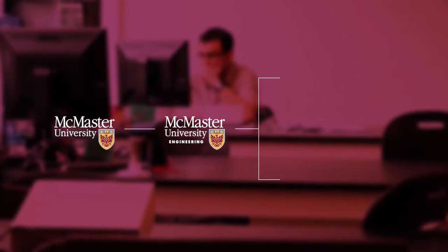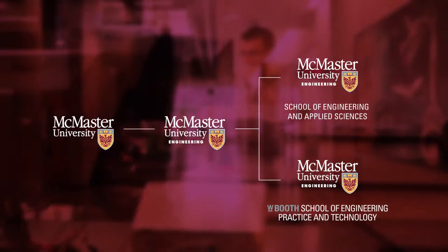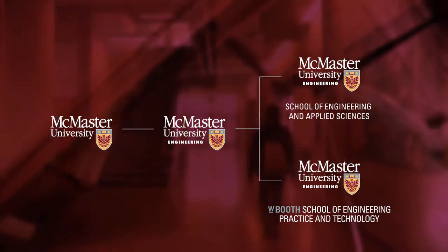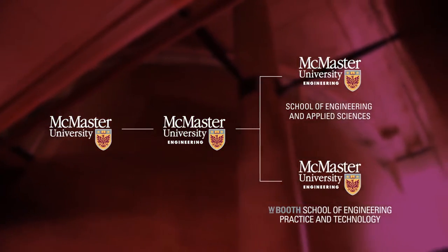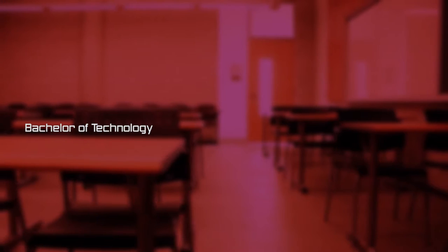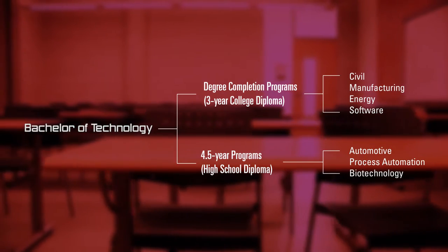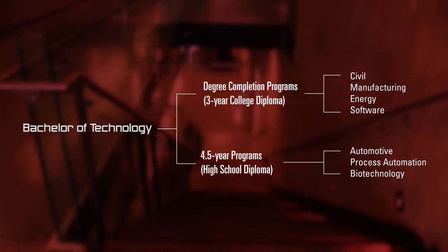Inside the faculty, we have two schools: the School of Engineering and Applied Science, and the School of Engineering Practice and Technology. You are in the undergraduate programs in the School of Engineering Practice and Technology. The degree completion programs, as you know, are something you go into after you've finished a three-year college diploma. But you should also know there are students that go into other types of Bachelor of Engineering Technology degrees directly from high school, including automotive and vehicle technology, process automation technology, and biotechnology.